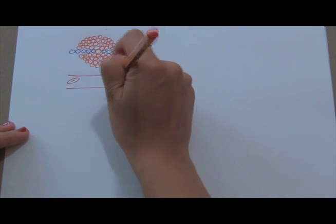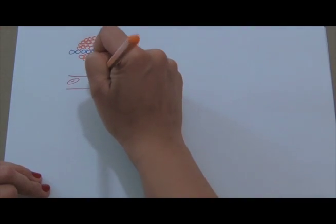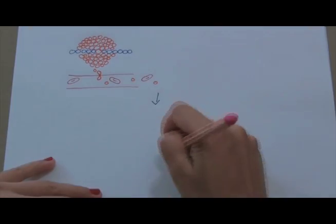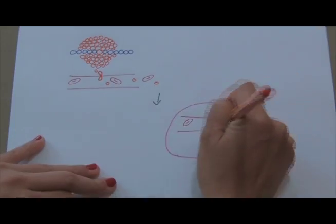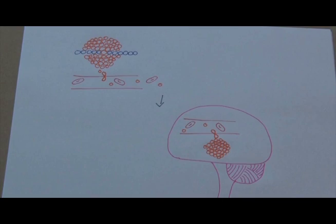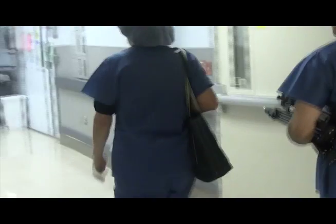Intervisation, where the cells enter the blood vessels. Survival in the circulation. Extrovisation, where the cells exit the blood vessels. And finally, seating at a distant site, leading to metastatic colonization.